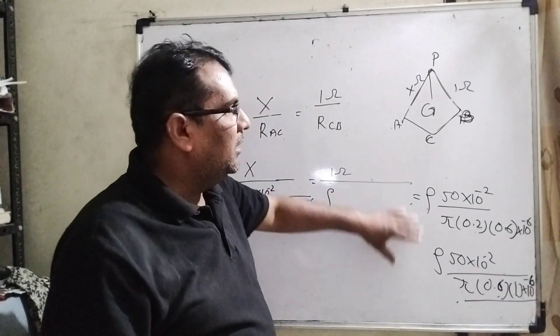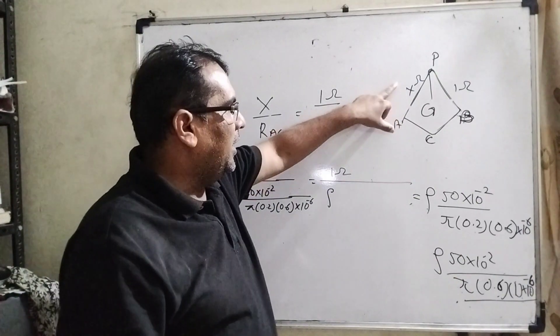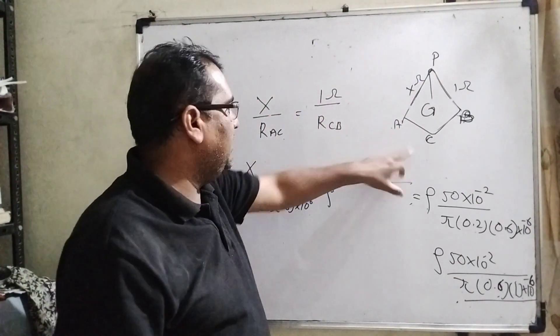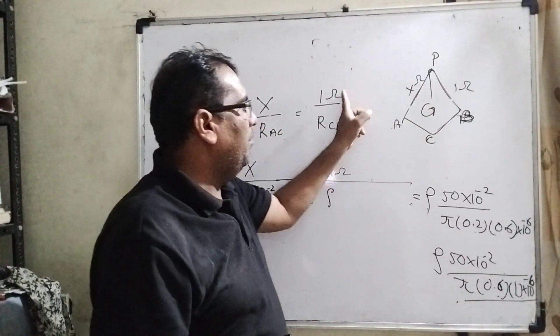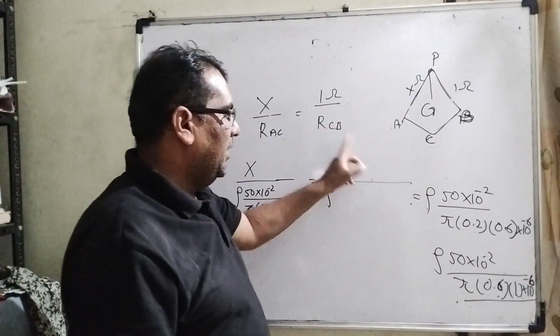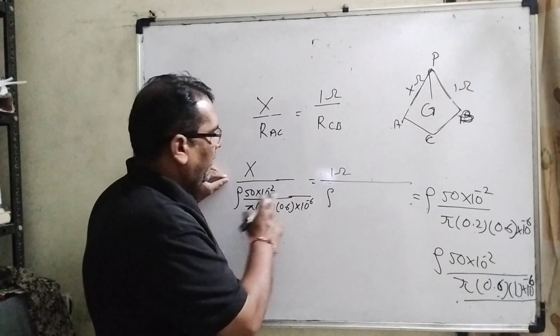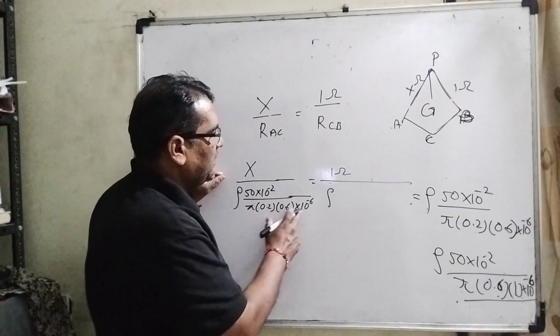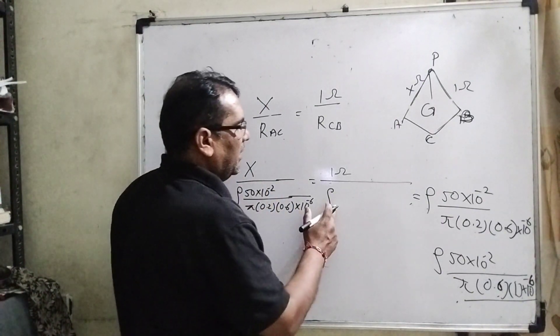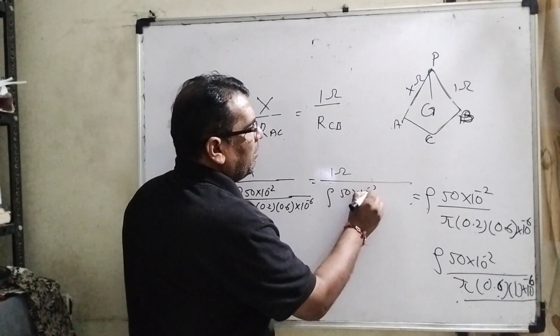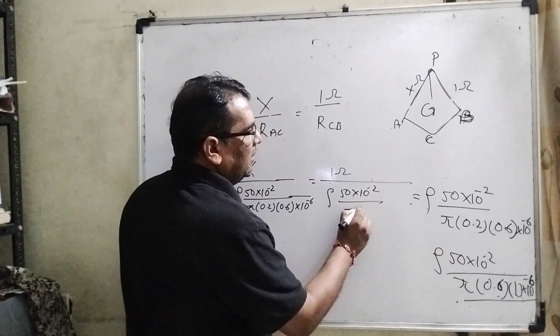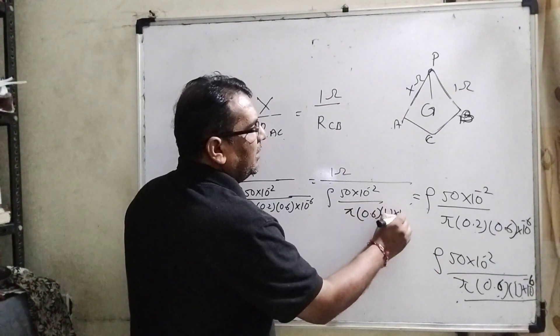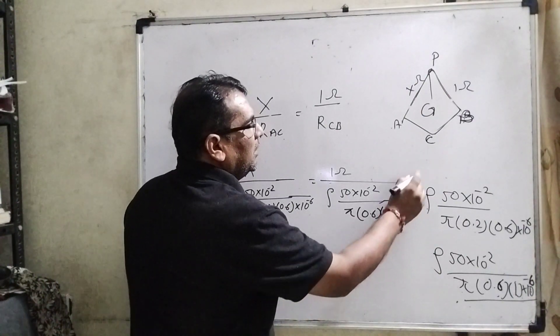Arrangement here: X ohm resistance unknown, X by RAC and 1 ohm by RCB. Now substitute this value here: rho times 50 into 10 raised to power minus 2, pi into 0.2, 0.6 into 10 raised to power minus 6. Here again: rho, 50 into 10 raised to power minus 2, pi, 0.6, 1 mm, and 10 raised to power minus 6. Now we get solving.